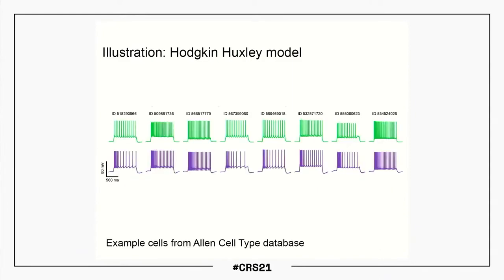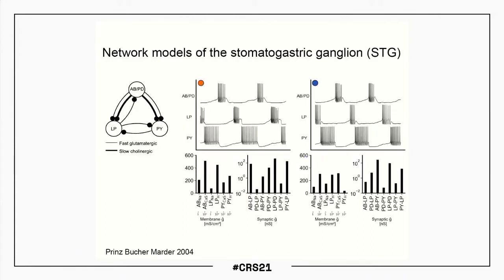This doesn't only work on simulated data — these are also results on data from the Allen cell type database, though in these cases it's harder to verify the true parameters. As a second application, we turn to a famous model in neuroscience: the model of the stomatogastric ganglion, which generates the famous pyloric rhythm. This model is famous because you can get very similar network activity from very different parameters — a classical example from Astrid Prince's work where two similar-looking pyloric rhythms were generated by very different network models. That's a challenge for inference because the posterior distribution will be very broad and possibly multimodal.